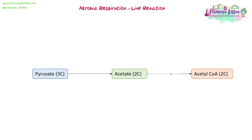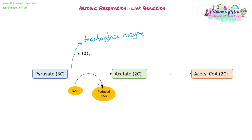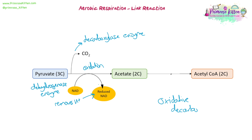We're starting with pyruvate, which is a three-carbon molecule. The first thing that happens is carbon dioxide is removed — this is known as decarboxylation, carried out by the decarboxylase enzyme. We also remove some hydrogen using the dehydrogenase enzyme. That hydrogen is donated to NAD, producing reduced NAD. This process can be called oxidative decarboxylation, because we've both oxidized and decarboxylated at the same time, giving us a two-carbon molecule.